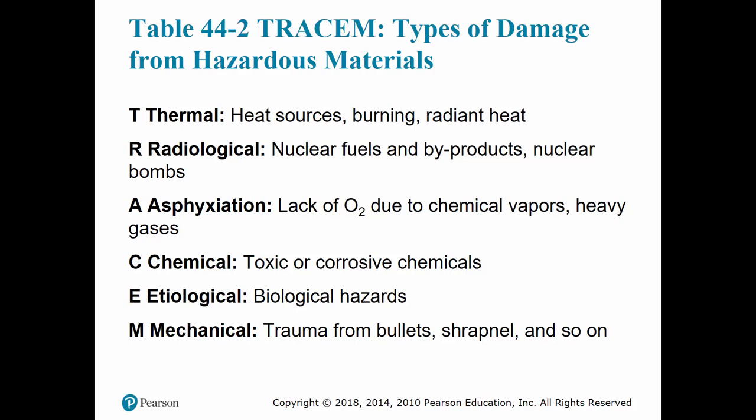Table 44-2 covers TRACEM, an acronym used to remember the types of damage caused by hazardous materials. T is for Thermal, caused by heat or burning material. R is for Radiological, such as nuclear fuels and byproducts. A is for Asphyxiation, caused by lack of oxygen due to chemical vapors. C is for Chemical, meaning toxic or corrosive chemicals. E is for Etiological, meaning biological hazards such as anthrax. M is for Mechanical, meaning trauma from bullets, shrapnel, and so on.